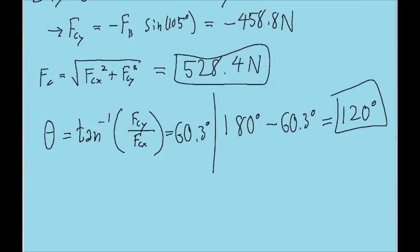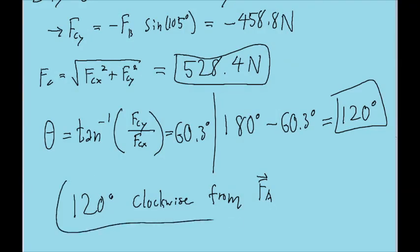So that means that 120 degrees is what this angle right here is. But again, we still have to communicate what that means. So I'm going to specify that this is 120 degrees clockwise from F sub A. So now I think we have now adequately communicated what that angle is, what the direction of the vector is.